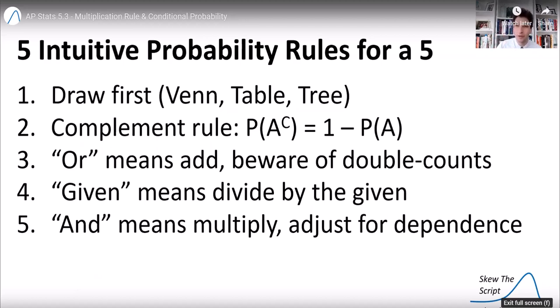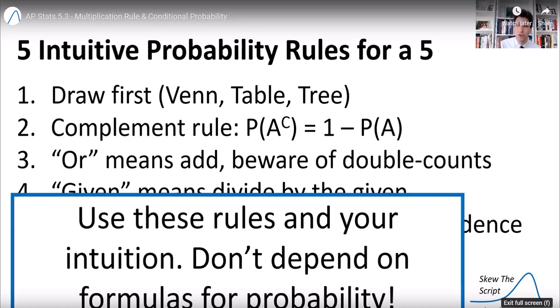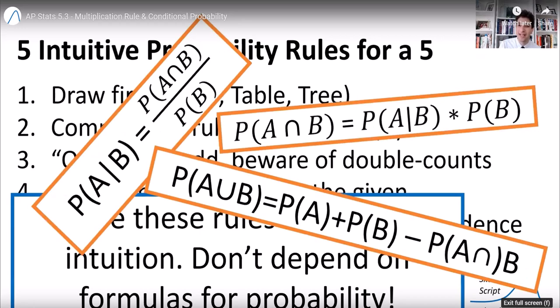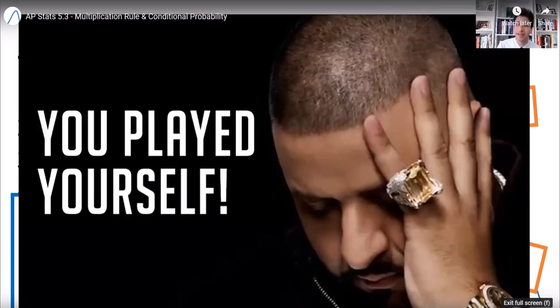Two, the complement rule. Probability of A not happening is one minus probability of A happening. Three, or means add. Beware of double counts. Four, given means divide by what's given. It's out of what's given. And then five, and. And means multiply. Adjust for dependence. Use these rules and your intuition. Do not depend on formulas for probability. If you depend on these sorts of formulas, often you won't even know where to start and get confused very easily. You will have, in the words of DJ Khaled, played yourself.